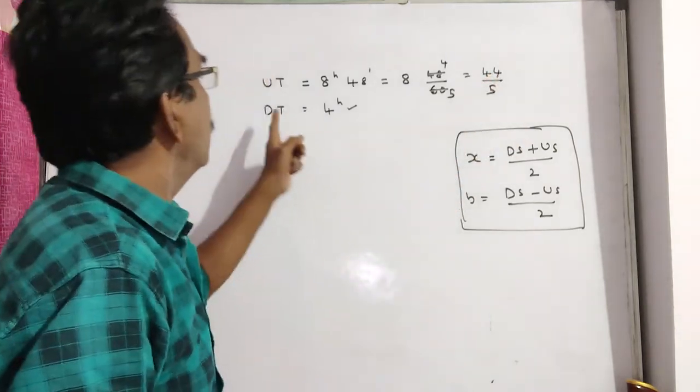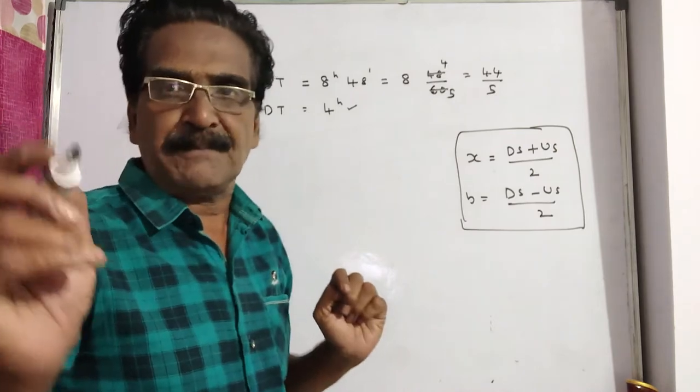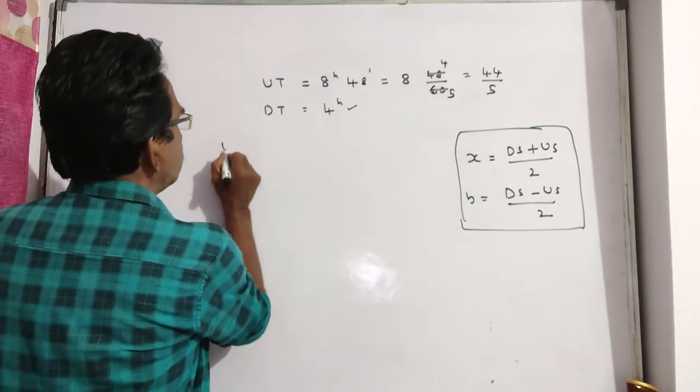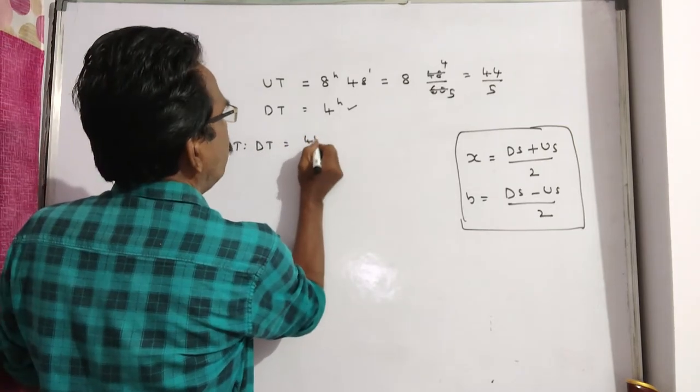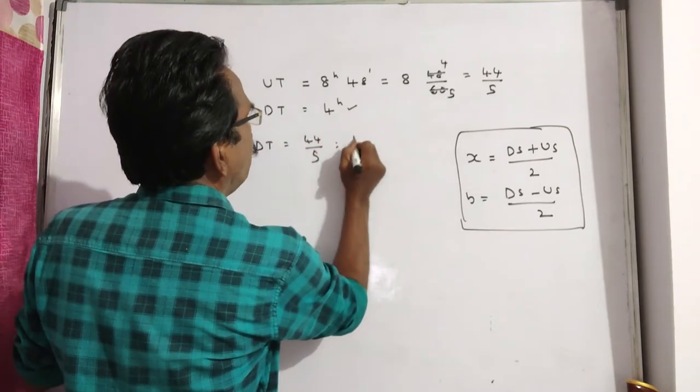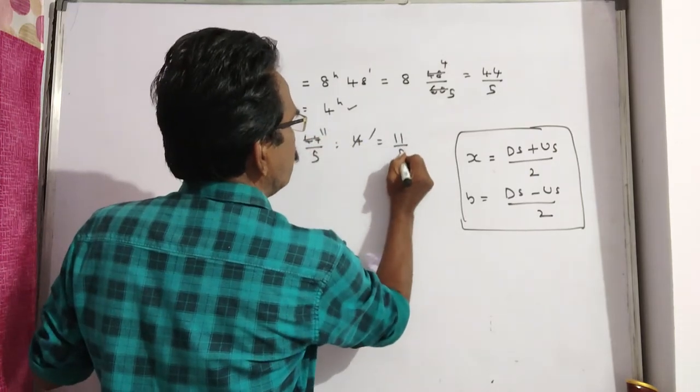The downstream time is 4 hours. The ratio of upstream time to downstream time is 44/5 : 4. Simplifying 44/5 : 4 gives us 11:5. This is the times ratio.